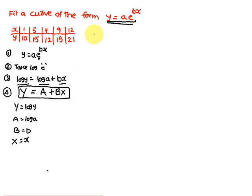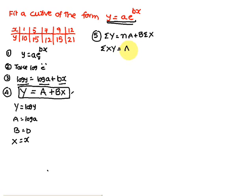Now what we have to do is solve this straight line equation — you already know how to solve a straight line equation. The normal equations are: Σ(capital Y) = nA + B·Σ(X), and Σ(XY) = A·Σ(X) + B·Σ(X²). All the letters are in capitals.